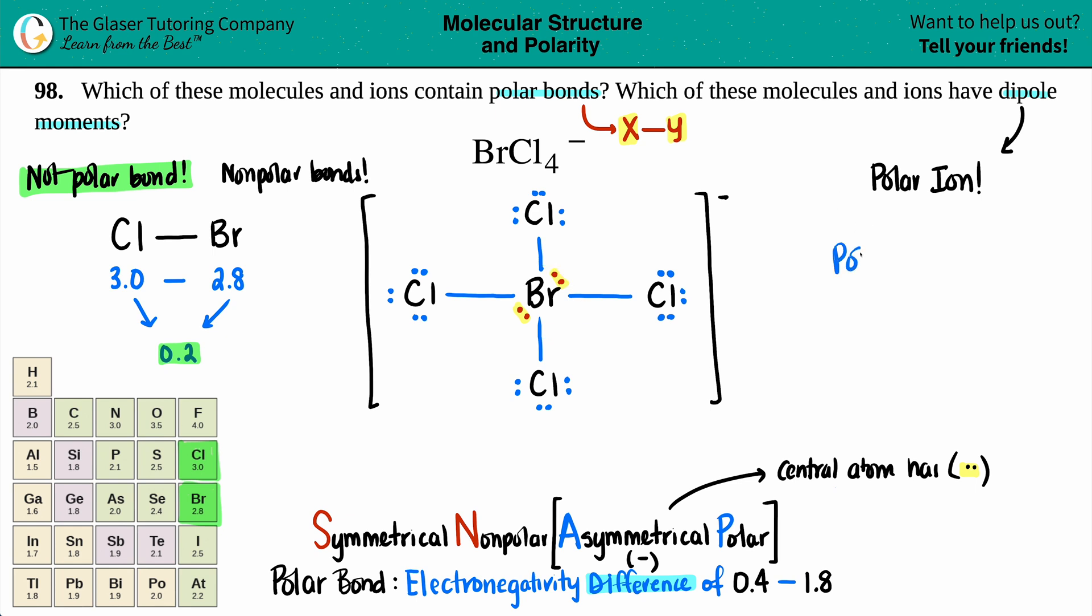If that central atom has dots, it is automatically a polar ion, and because of that it has a dipole moment. That is the final answer for this one. It's got non-polar bonds; however, the molecule is polar because of those electrons in the center.